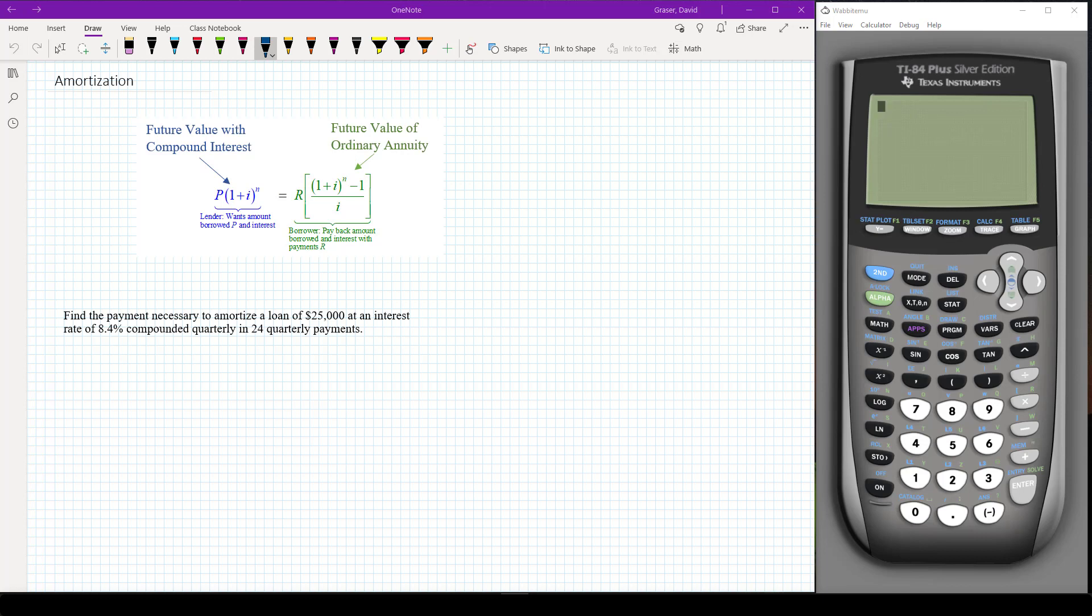So it says find the payment necessary to amortize a loan of $25,000 at an interest rate of 8.4% compounded quarterly in 24 quarterly payments. So basically what we're going to do here is we're going to find the R value, that's the payment.